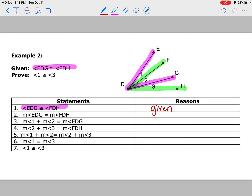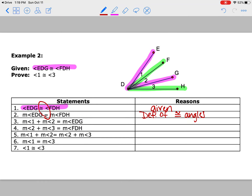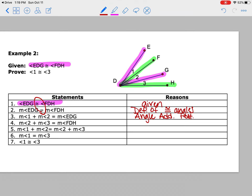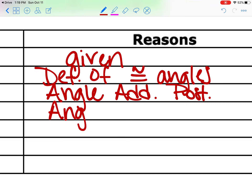Going from step one to step two, the only difference is congruent becomes equals — remember, that is definition of congruent angles. Now let's look at step three: angle 1 plus angle 2 equals all of angle EDG. That looks like a part plus part equals whole situation — so if we see part plus part equals whole, we know that is the angle addition postulate. Looking at step four, I see the same thing: angle 2 plus angle 3 equals FDH — another part plus part equals whole, so again we have another angle addition postulate.